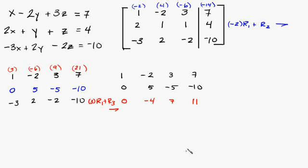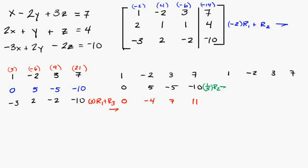What I'm going to do is start copying everything over. I want this to be a 1 here. That's easy — I can just multiply everything times 1/5. So I'm going to go ahead and do that, and I'll use green here. We're going to do 1/5 times row 2, and that's going to go over here.